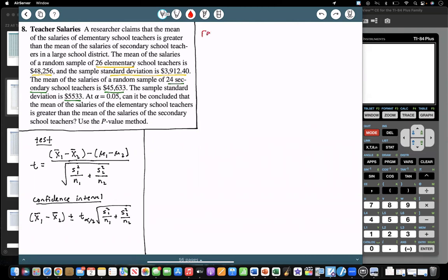So let's start off with our conditions that need to be met in order to use the T-distribution. So remember, both of our samples need to be randomly selected, and it does tell me here that they were both from random selection. So that condition's met.